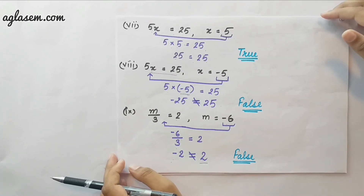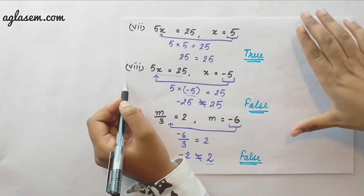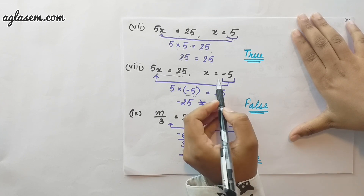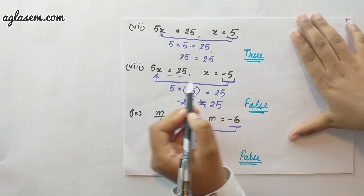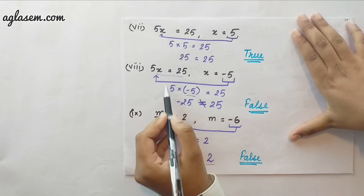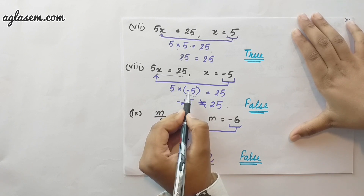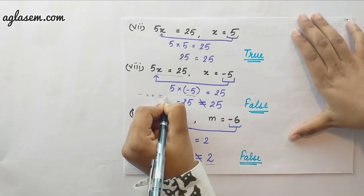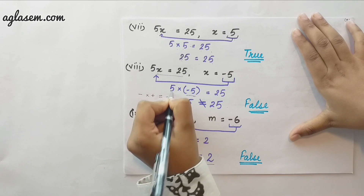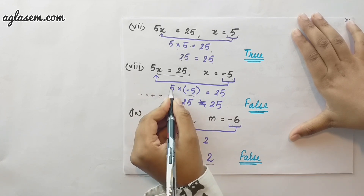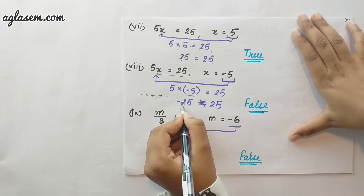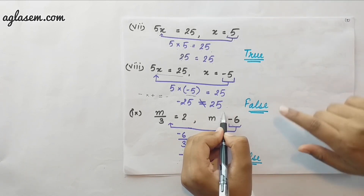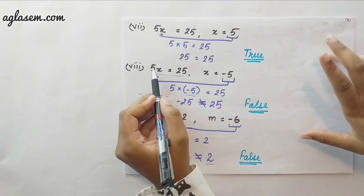The next question is a bit tricky. The equation is 5x equals to 25 and the value of x is minus 5. We put minus 5 into the equation. The multiplication of a negative sign with a positive sign gives a negative sign. So 5 into minus 5 equals minus 25. Minus 25 is not equal to 25, therefore this value of x does not satisfy the equation.